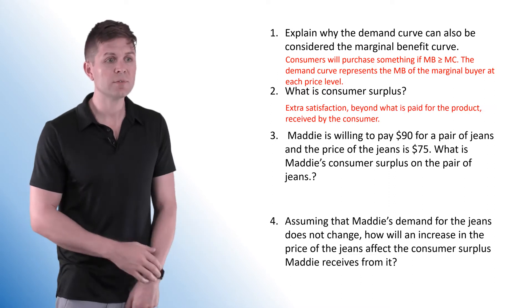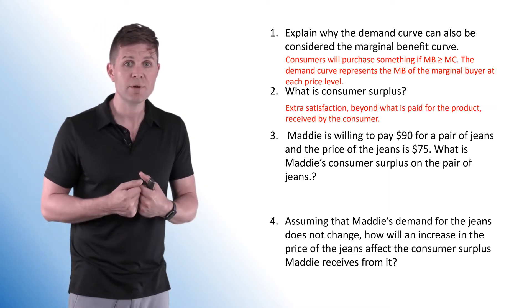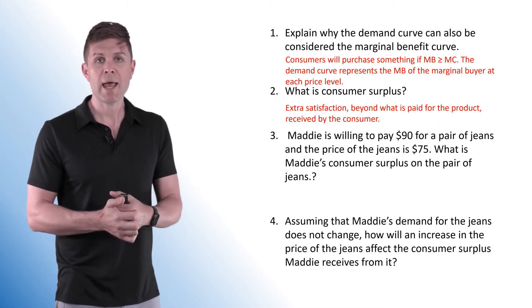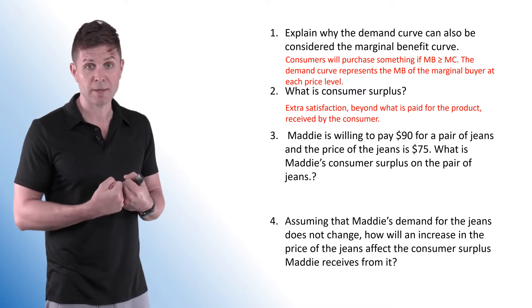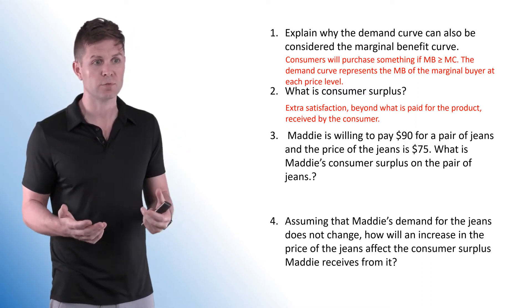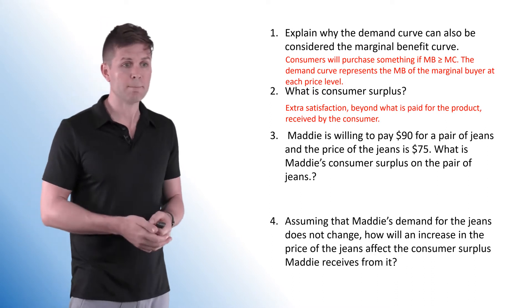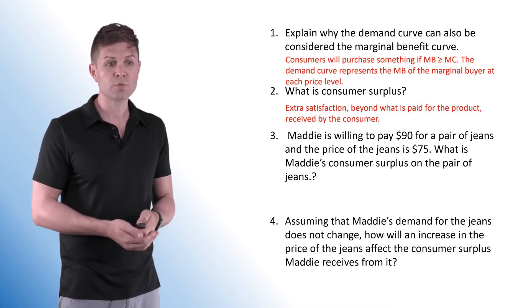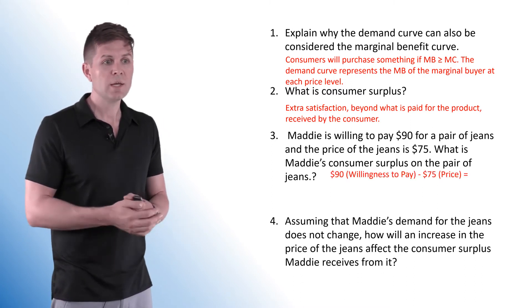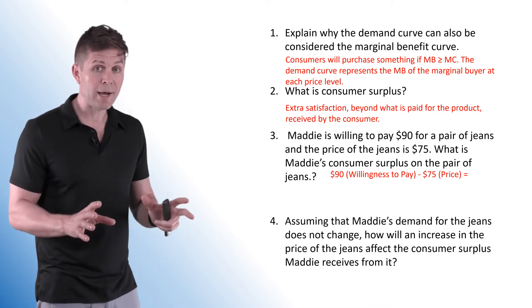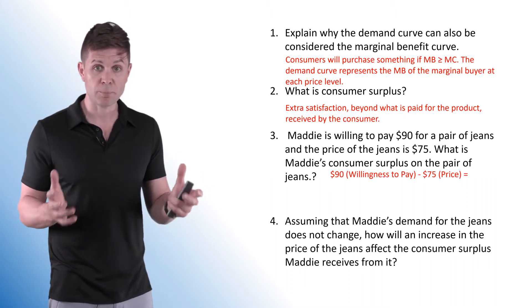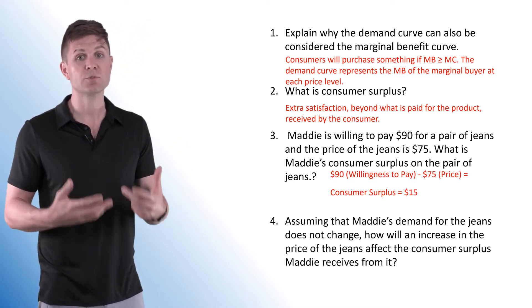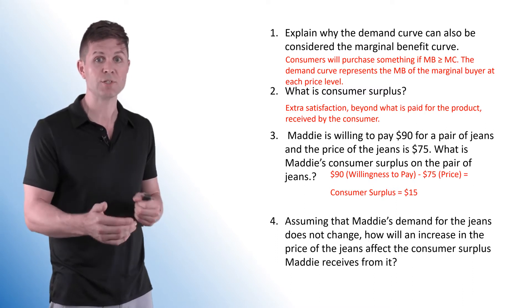What is consumer surplus? It's the extra satisfaction that we receive beyond what we paid for the item. So if I pay $10 for something and get $15 worth of satisfaction out of it, I'm getting $5 in extra satisfaction — that's consumer surplus. For number three, Maddie is willing to pay $90 for a pair of jeans and the price of jeans is only $75. Her consumer surplus is $90 minus $75, which equals $15 — the extra satisfaction beyond what she paid.